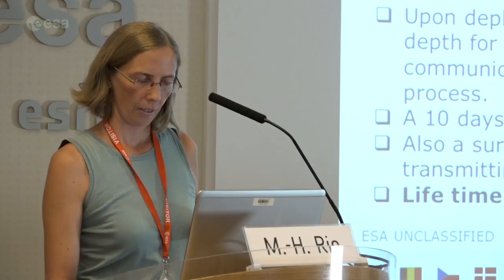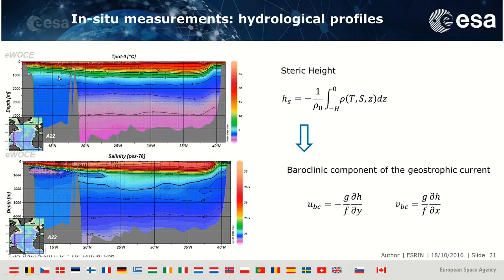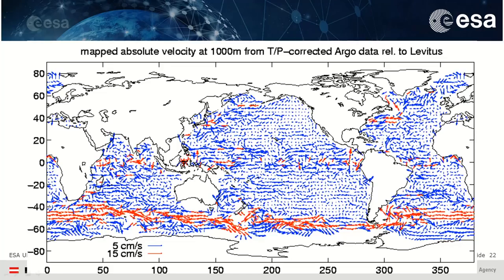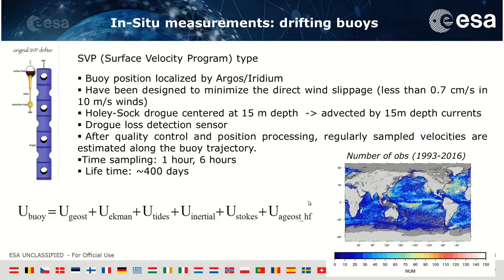From temperature and salinity profiles — for example from XBT lines or CTD lines in the Atlantic Ocean — you get steric height from which you calculate the baroclinic component of the geostrophic current. A map of mean velocity at 1,000 meter from Argo Floats shows the major ocean currents visible at the surface with reduced intensity at depth.